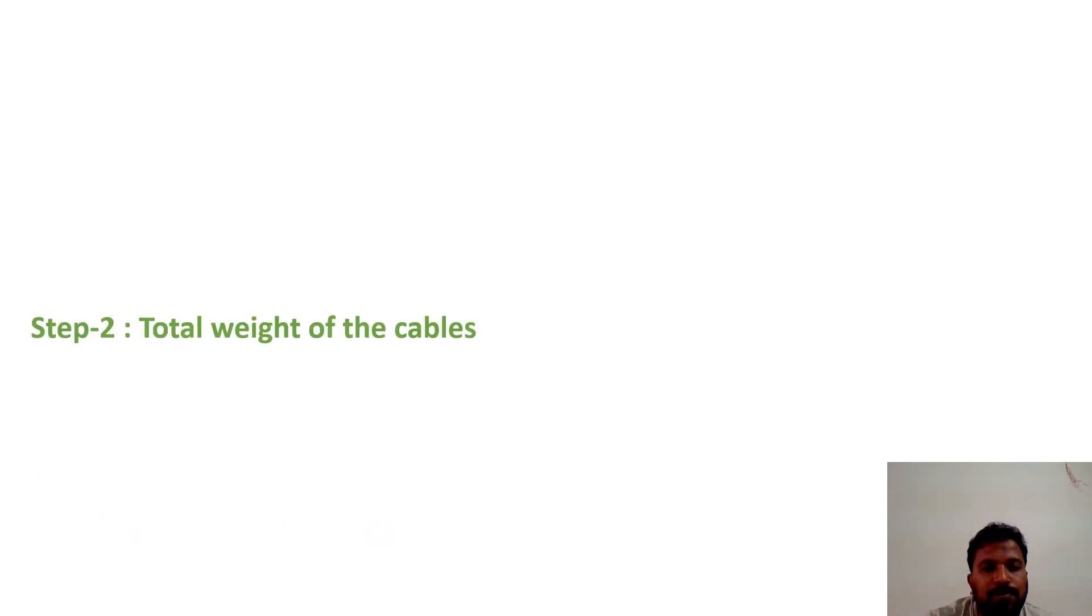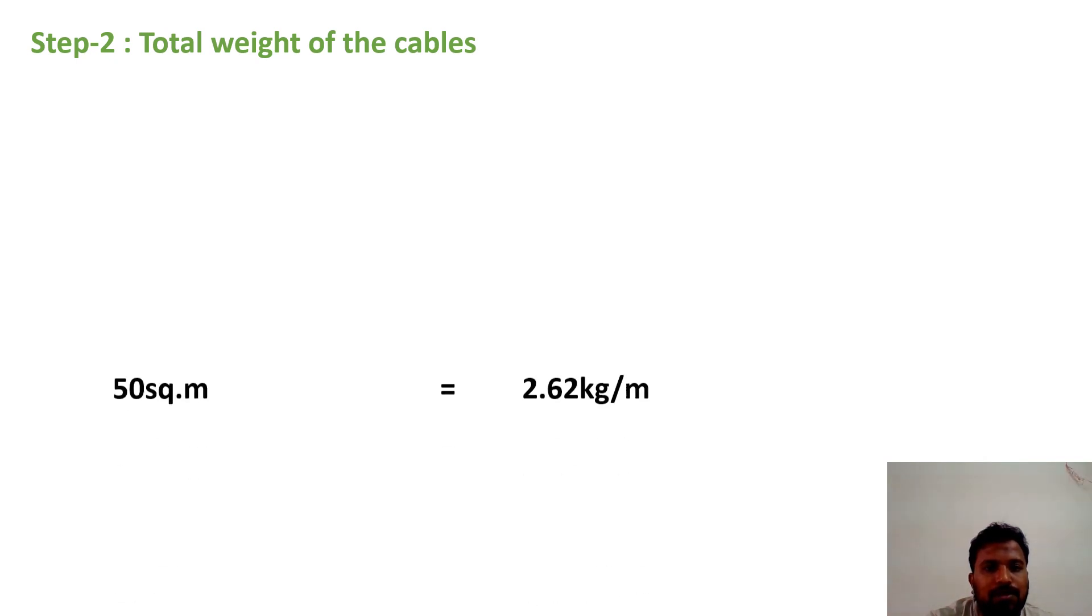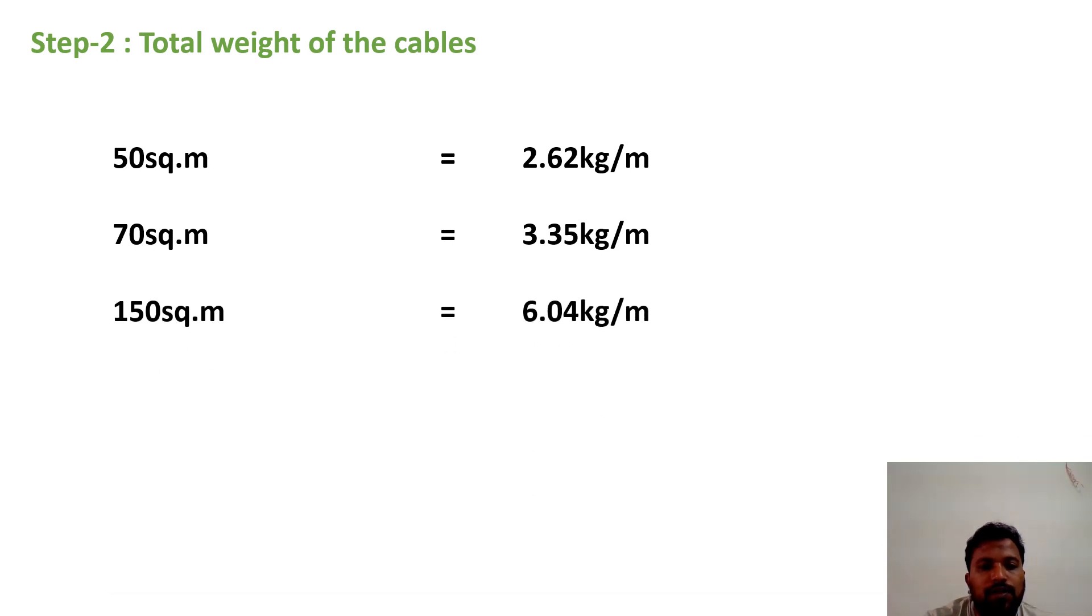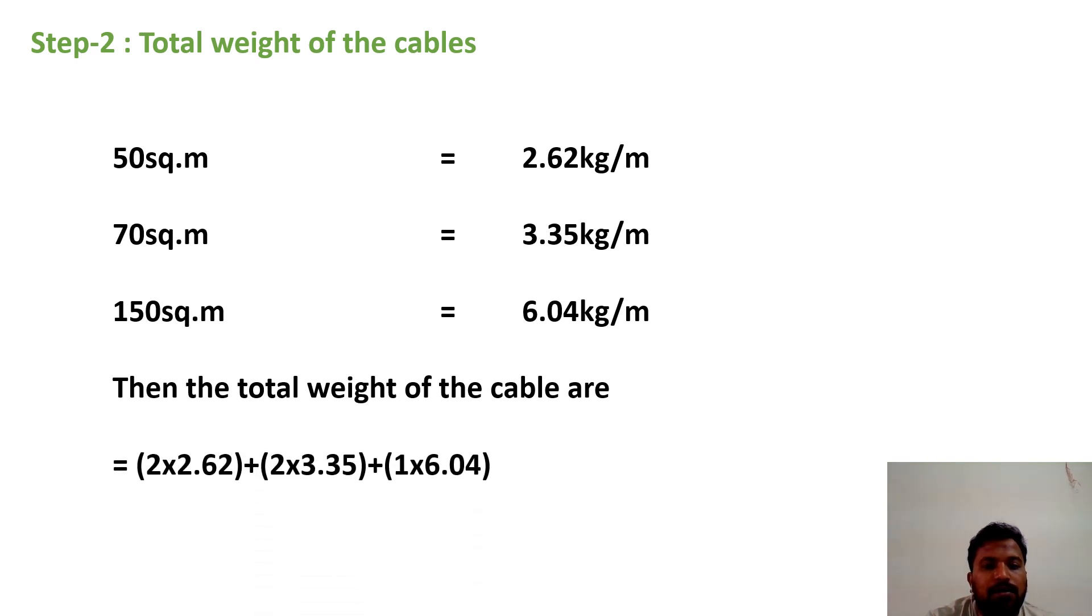Next step, step 2. Total weight of the cables. 50 square mm is 2.62 kg per meter, 70 square mm is 3.35 kg per meter, and 150 square mm is 6.4 kg per meter. Similarly, these values also I got from the cable manufacturing chart. If you add all those weights, 2 into 2.62, 2 into 3.35, 1 into 6.04. If you are adding all those values, 18.8 kg per meter square.